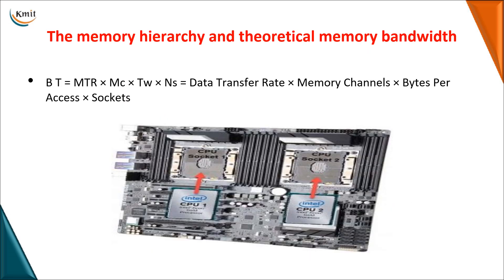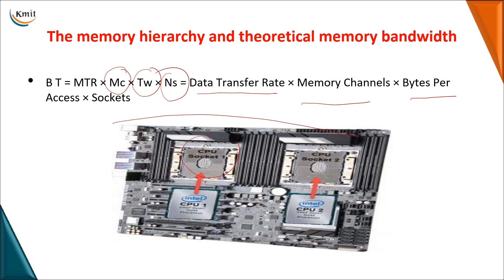To calculate memory bandwidth — the rate at which data is transferred — the formula involves the number of memory channels, the number of bytes per access, and the number of sockets. For example, consider a two-socket system with CPU 1 and CPU 2 — a dual-core processor with two sockets. Depending on those values, you can calculate the theoretical bandwidth. Theoretical bandwidth is a practical calculation performed ideally based on hardware specifications.